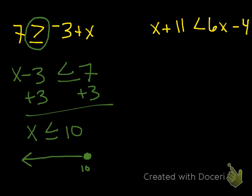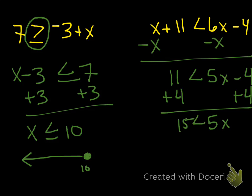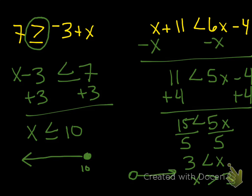This next one is a little different because we've got variables on both sides, but you solve it just like an equation with variables on both sides. We want to get x's on one side and non-x's on the other. I don't want a negative x, so I'm going to subtract x from both sides. I get 11 is less than 5x minus 4. Then plus 4, plus 4, so 5x is greater than 15. Divide both sides by 5, so x is greater than 3. Your graph should be an open circle going to the right, with 3 on the number line.